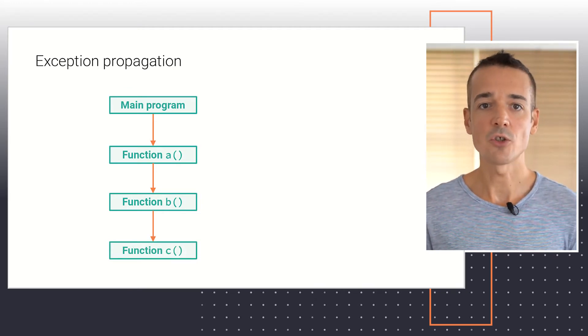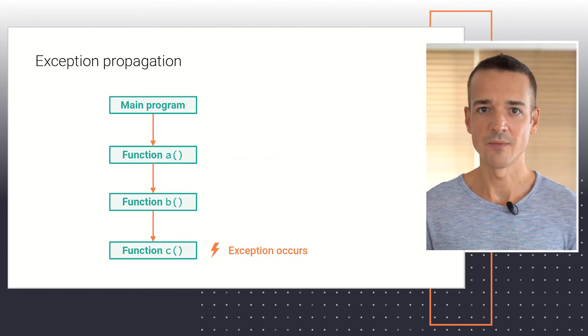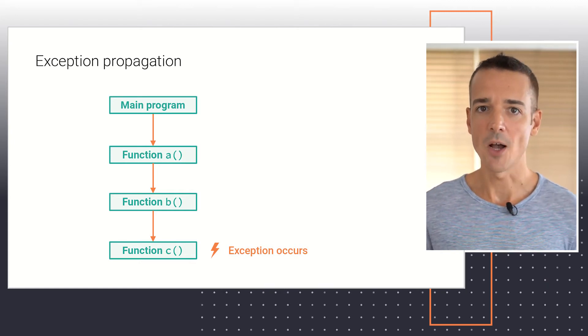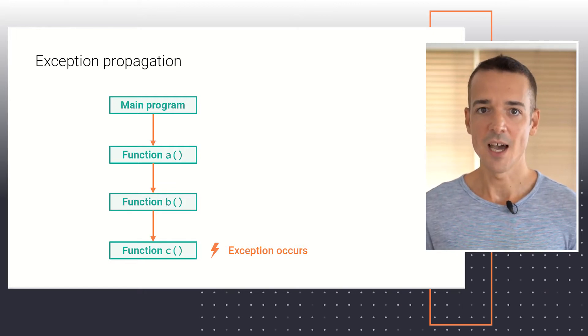It's assumed that a statement in function C causes an exception and that there is no try-except block in this function to take care of it. Python then exits the function immediately and propagates the exception toward function B.